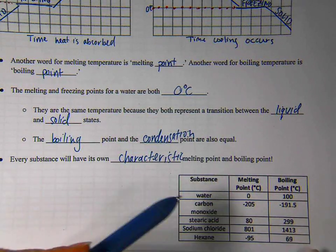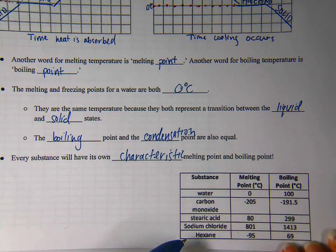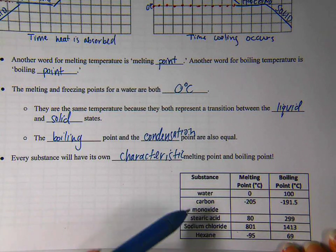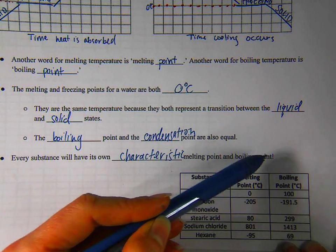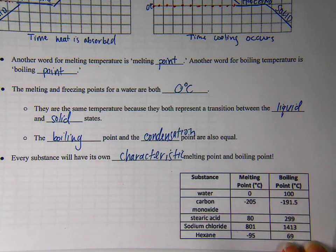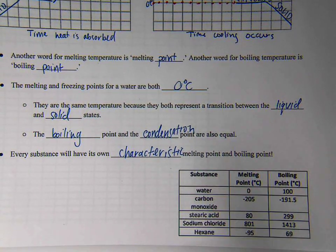So if we look at this graph here, we've got five different substances listed. You should have carbon monoxide, sodium chloride maybe, hexane and stearic acid are two other chemicals. You'll notice that each one has its melting point listed and its boiling point listed. They're different for every substance because they're not water. Only water boils and melts at zero and a hundred.